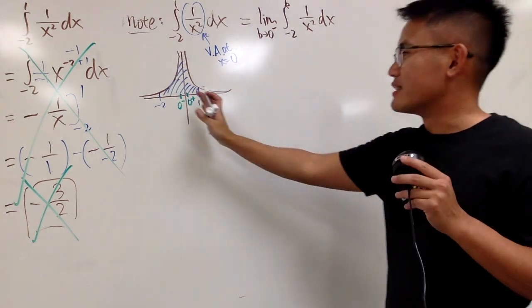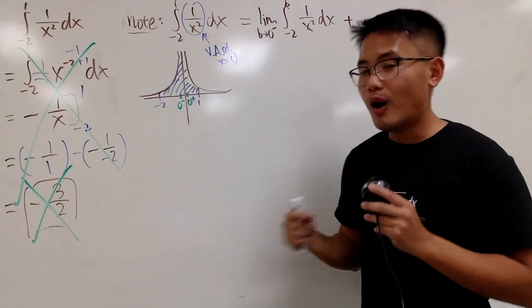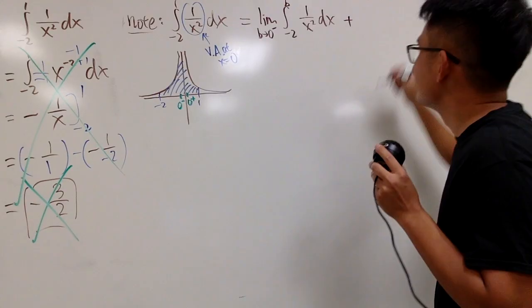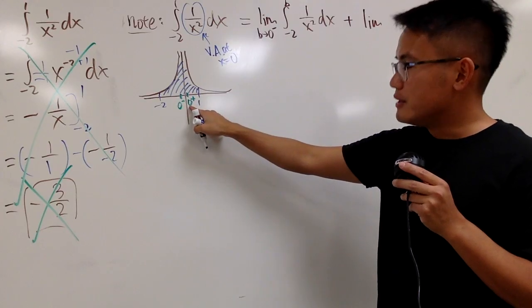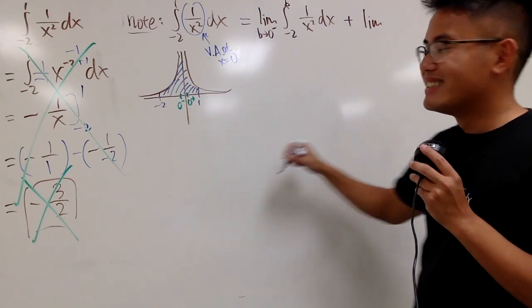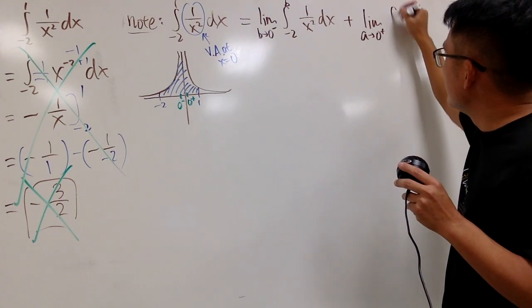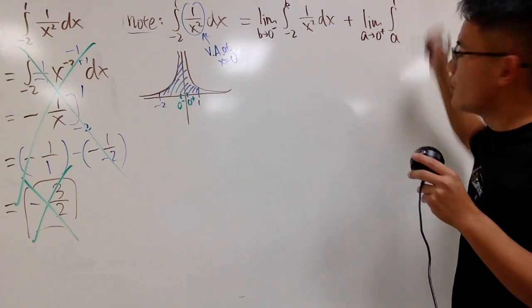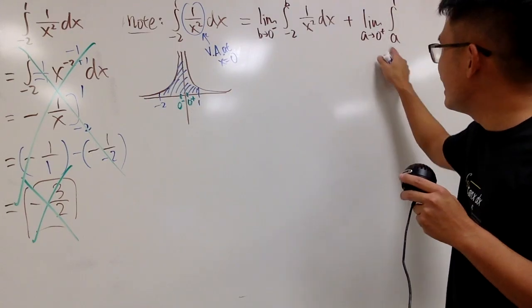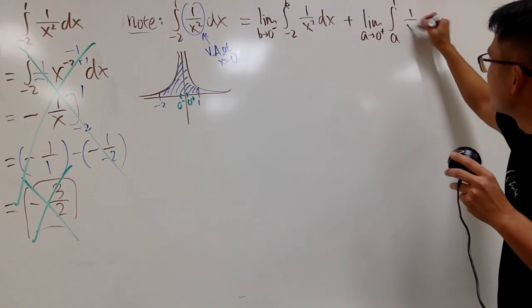And then the rest, 1 over x squared dx, like that. And, of course, we have to pick up the second part right here. So, we are going to add. And this right here also requires the limit. So, I will say the limit. And this is going from 0 plus to 1. So, I will say, let's say a approaches to 0 plus. And then we have the integral a to 1. Right? Because a is approaching 0 plus. And then the rest is the same, of course. Just like this.